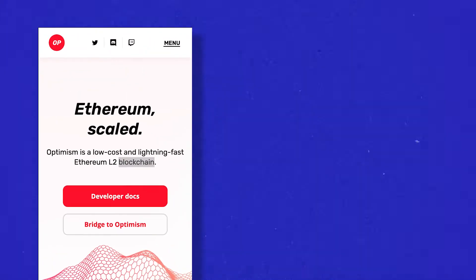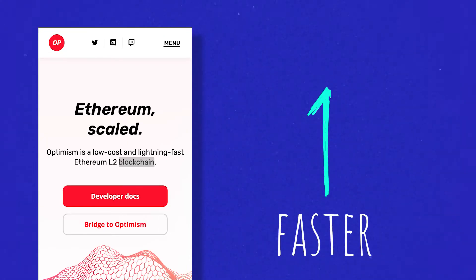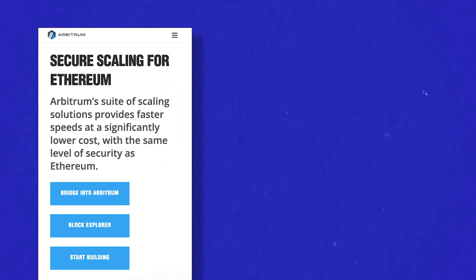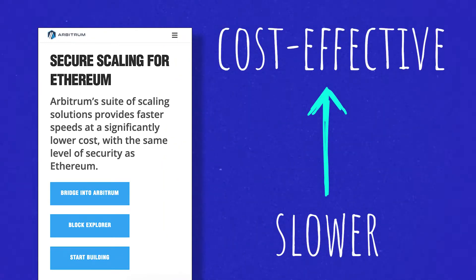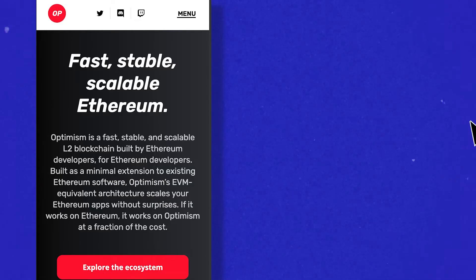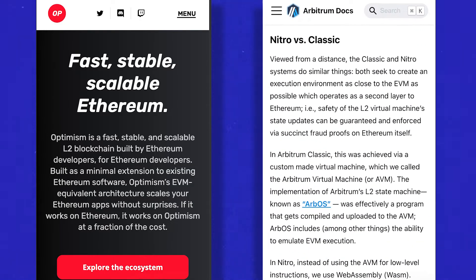In normal English, this means Optimism's method is faster but potentially more expensive due to higher gas fees because it's executed on the L1. Arbitrum's way takes more time but is more cost-effective. Moreover, Optimism uses the Ethereum Virtual Machine (EVM) while Arbitrum has its own Arbitrum Virtual Machine (AVM). This means Optimism's programming language is limited to Solidity, while Arbitrum supports all EVM programming languages.